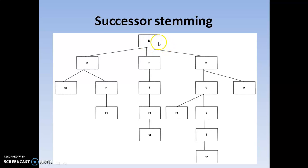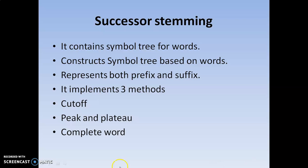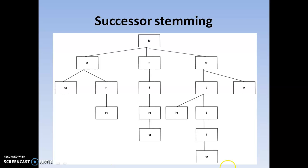This is the root word. Let us find out what words are there in the tree. Bring is a word here, bag is a word here, box is a word here, and B-O-T-T-L-E is a word here. If you cut this root, you get words like box, and ring — some words will come if you apply operations like cut off, peak, flat, or complete word.